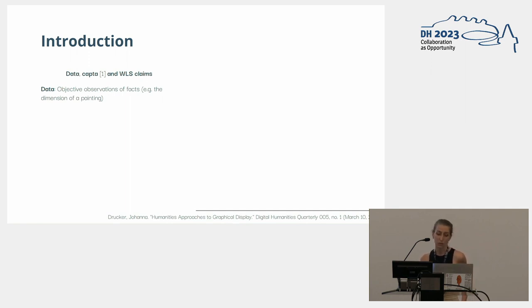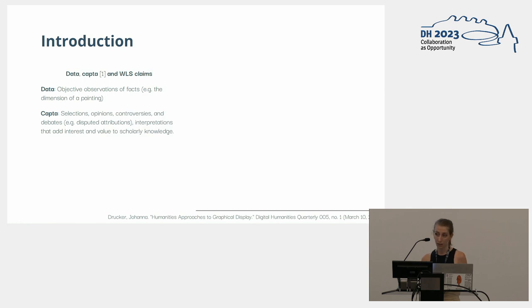Data are those objective observations of facts — for example, the dimension of a painting — while CAPTA represents selections, opinions, controversies, or interpretations, such as attributions of a painting, that actually add interest and value to scholarly knowledge.